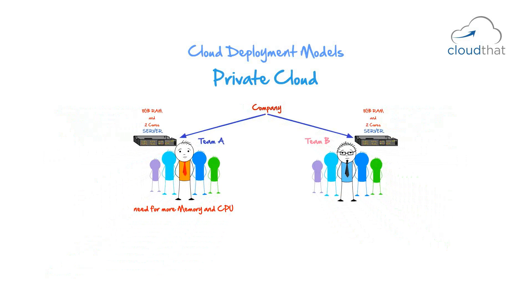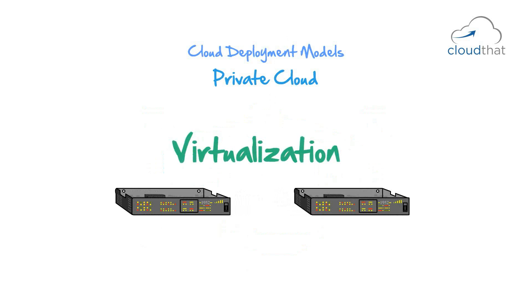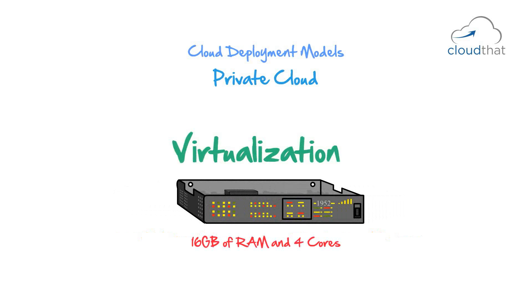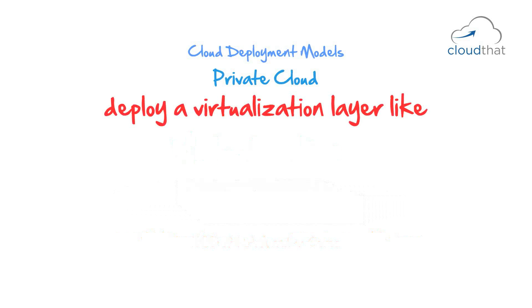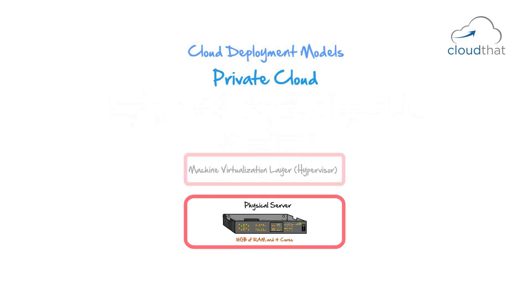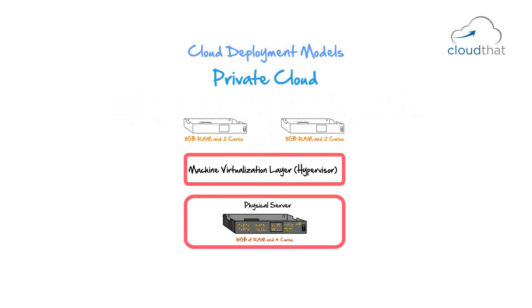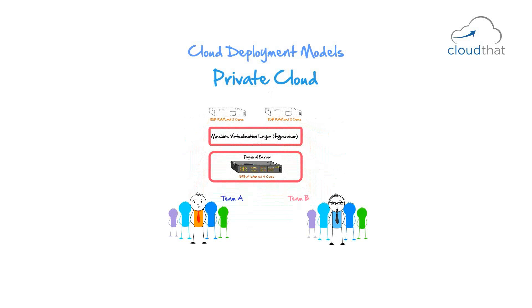It is not possible to shift over some of Team B's resources to Team A in traditional IT infrastructure. The first big idea that came into the market for this was virtualization. Instead of buying two servers each with 8 GB RAM and 2 cores, the company would buy a bigger server with 16 GB of RAM and 4 cores and deploy a virtualization layer like VMware ESXi, Microsoft Hyper-V, or Xen on top of it. Two virtual instances with 8 GB RAM and 2 cores each would be created on top of the same physical machine and provided to respective teams. Now one can customize to have some of Team B's capacity given to Team A.